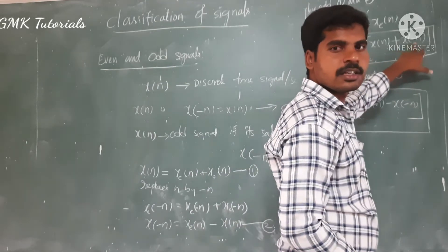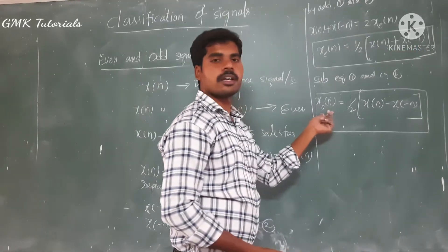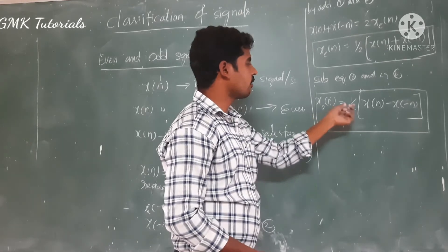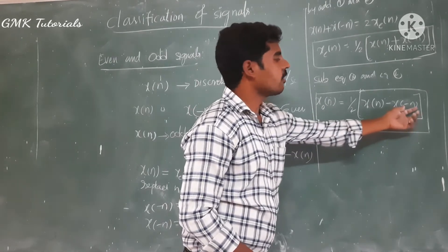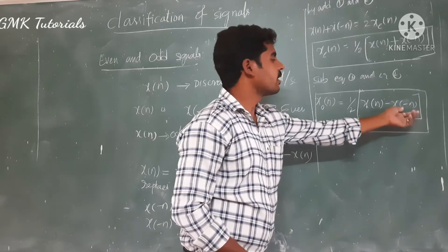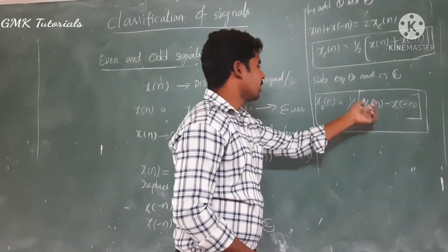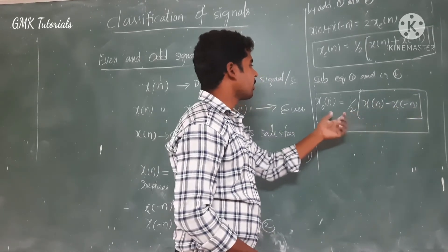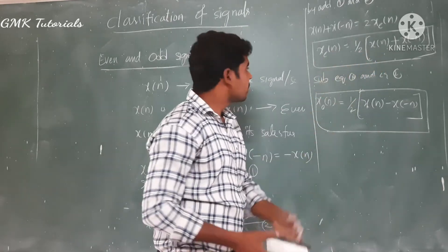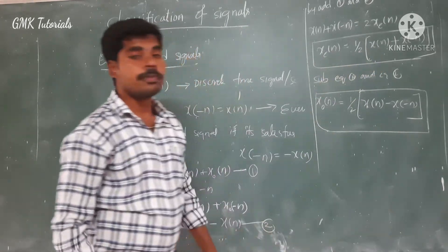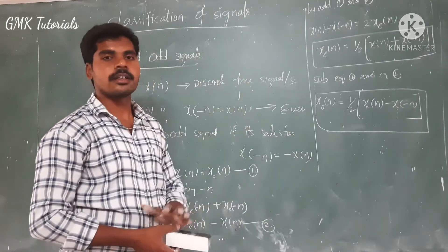In a real-time example, if x of n is a given sequence and we want to find the even and odd components, we use these two formulas. To calculate the even component: x_e of n equals one half times x of n plus x of minus n, where x of minus n means the folded version. To calculate the odd component: x_o of n equals one half times x of n minus x of minus n.